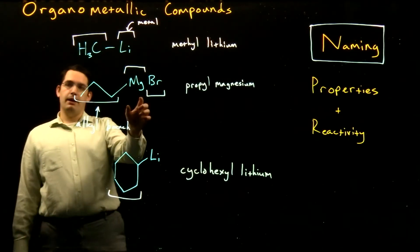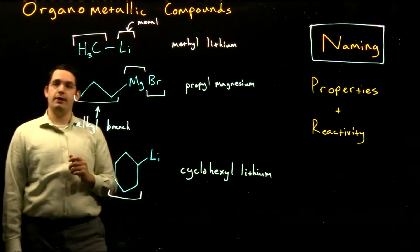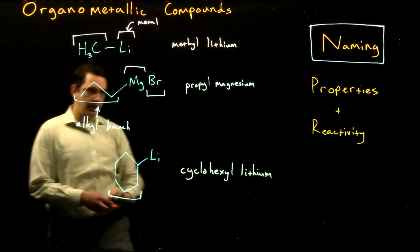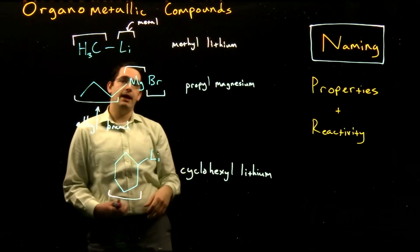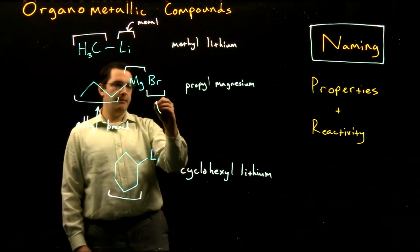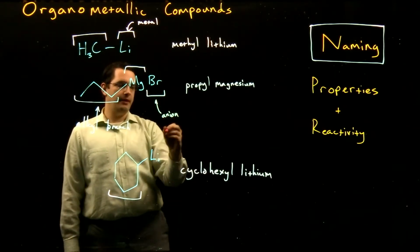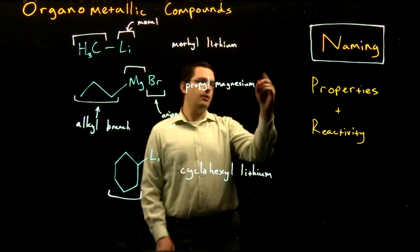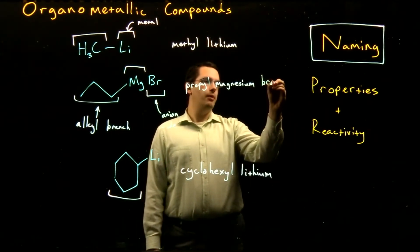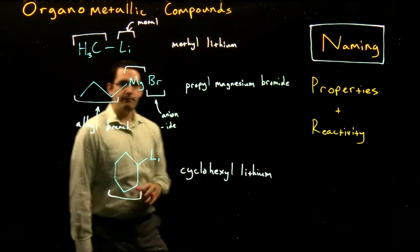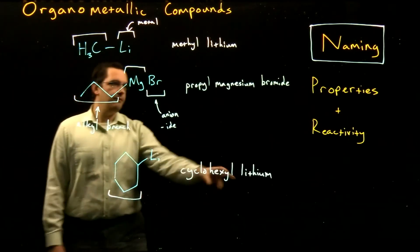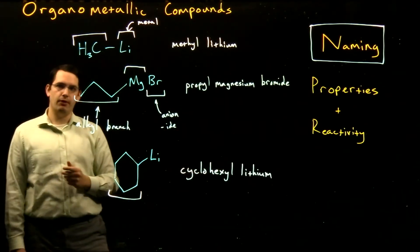With our magnesium-based compound, we have a third component to add: our alkyl branch, our metal, and now our halogen, which we name as an anion by adding the -ide ending. So for propyl magnesium with bromine here, this is propyl magnesium bromide. We just add our two or three components together to get the full names for our organometallic compounds.